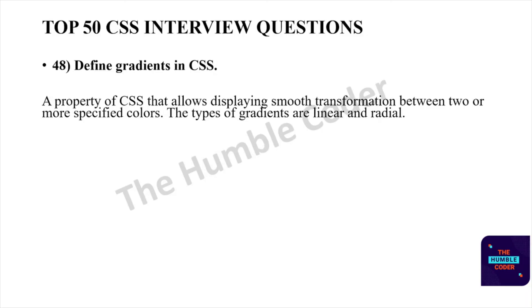Define gradient in CSS. A gradient is a CSS property that allows displaying smooth transformation between two or more specified colors. The types of gradients are linear and radial.